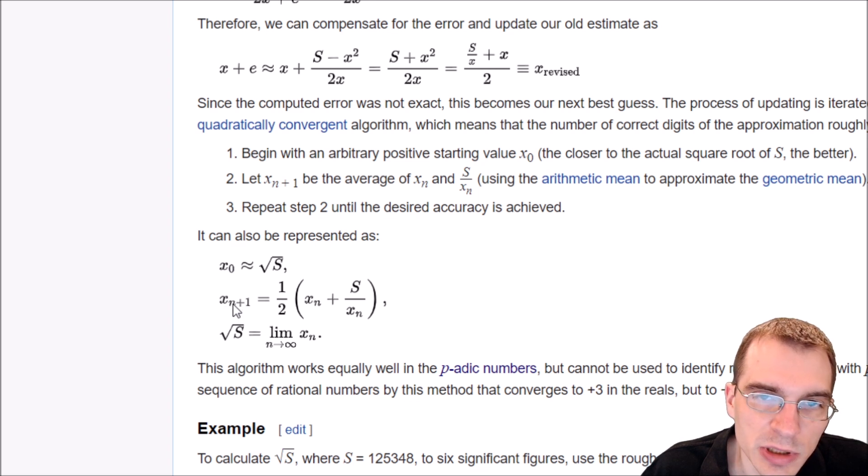And then we just keep updating this estimate based on this formula. So the next estimate, which is x n plus 1, we start with x of 0, n plus 1 of 0 would be 1, but then we go to the second estimate, third estimate, and so on. So the next estimate after whatever initial one we have is equal to 1 half times that current estimate plus s divided by the current estimate, where this value s is the number that we're finding the square root of.